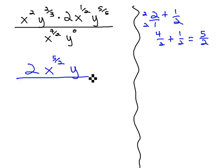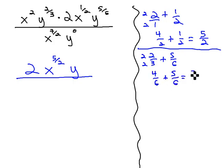Similarly, with the y's, we have 2 thirds and 5 sixths. 2 thirds plus 5 sixths. The common denominator is 6, so we'll multiply by 2 to get 4 sixths plus 5 sixths, which is 9 sixths. We can reduce that by dividing by 3 to get 3 halves. The exponent on y is 3 halves.